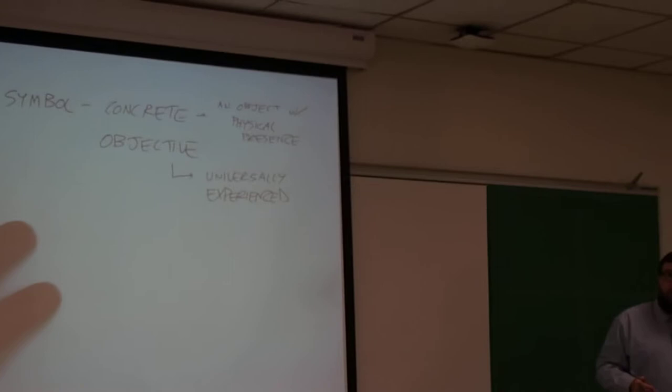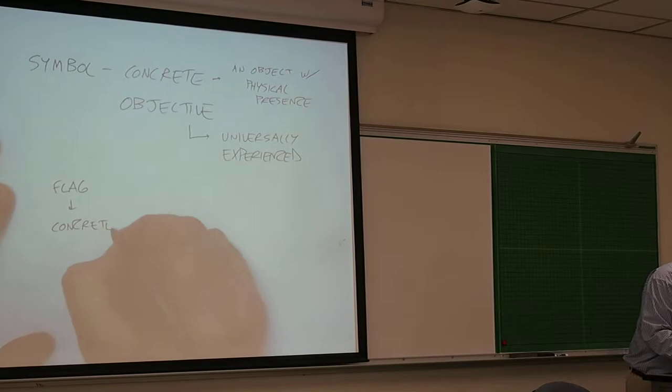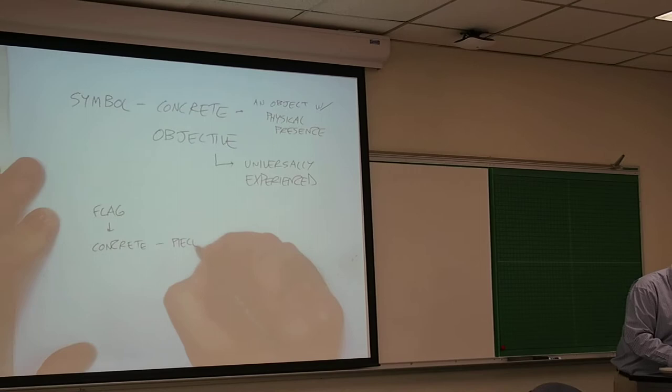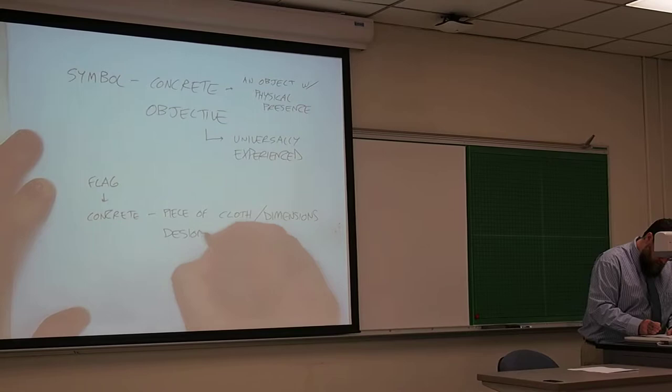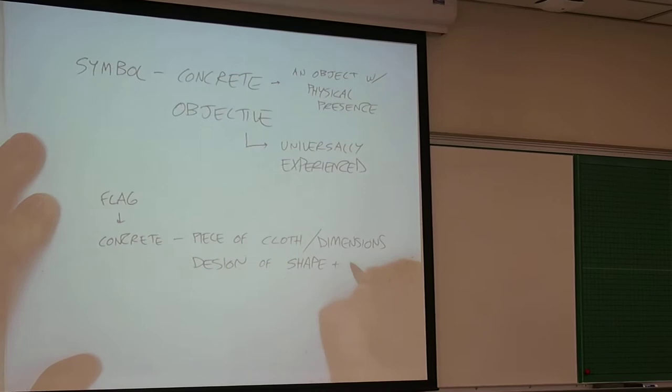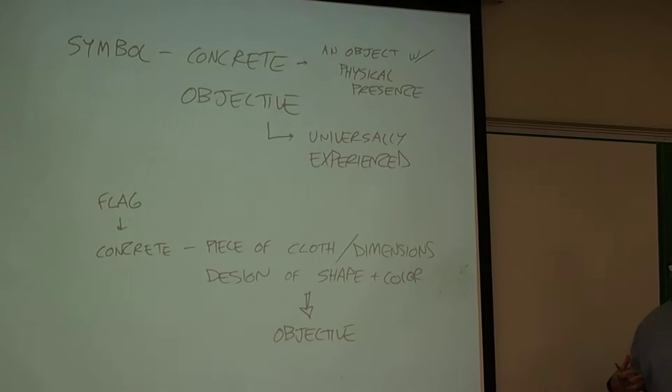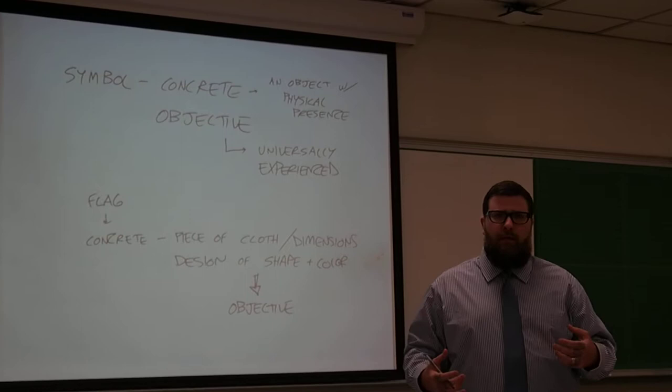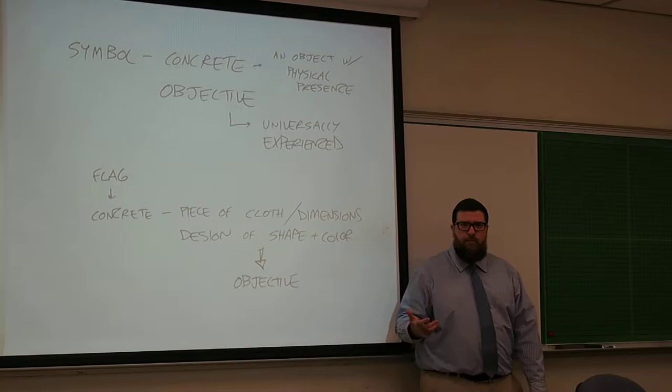A lot of times the first example that I'll give my students of a symbol would be a national flag. We discuss its concrete nature. It is a piece of cloth of particular dimensions with a design of shape and color. I explain that this is objective in that everyone experiences the flag in the same way. We don't see it as different colors according to the different viewer. The cloth itself doesn't have a different texture to different individuals. It has its own objective and universally agreed upon and experienced identity.